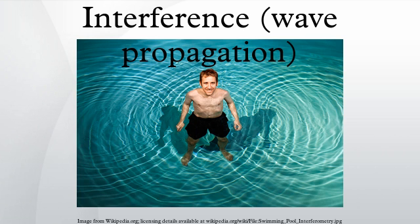A point source produces a spherical wave. If the light from two point sources overlaps, the interference pattern maps out the way in which the phase difference between the two waves varies in space. This depends on the wavelength and on the separation of the point sources. The wavelength increases from top to bottom, and the distance between the sources increases from left to right. When the plane of observation is far enough away, the fringe pattern will be a series of almost straight lines, since the waves will then be almost planar.